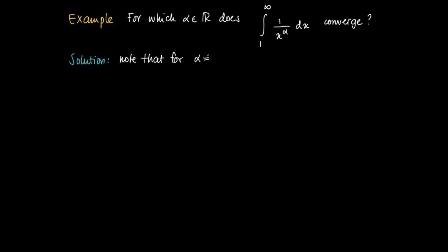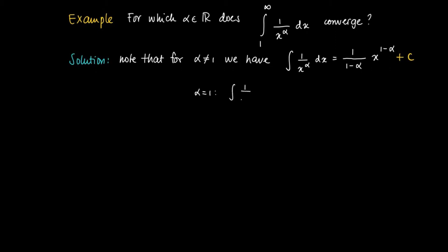Notice that if alpha is not equal to 1, then the primitive of 1 over x to the power alpha is an easy one, since we may simply find it by considering 1 over x to the power alpha as a power function. So we get 1 over (1 minus alpha) times x to the power (1 minus alpha) plus c. And if alpha equals 1, we have the function 1 over x, whose primitive is the natural logarithm of the absolute value of x plus the integration constant — don't forget it.